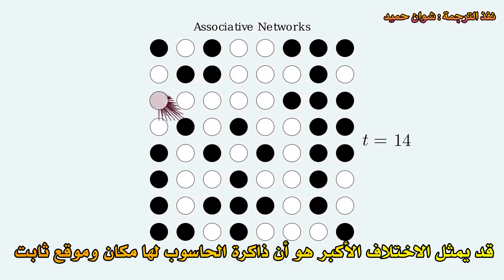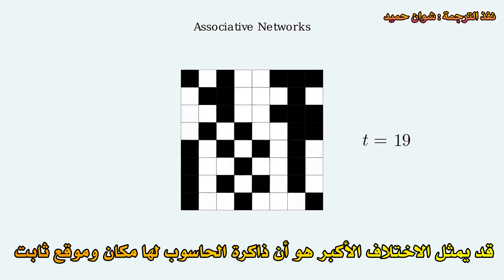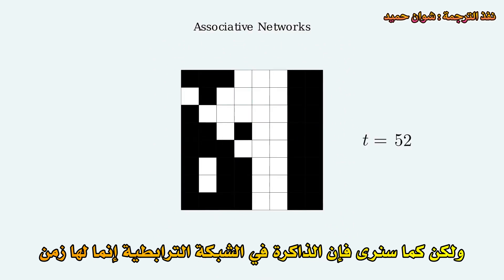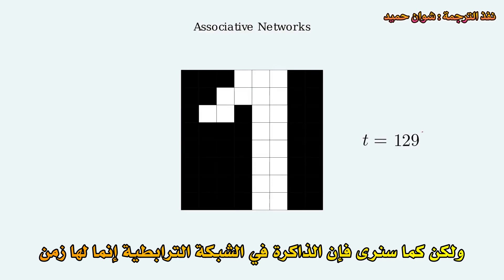The biggest difference might be: computer memories have a place, a fixed location. But as we'll see, the memories in an associative network rather have a time.